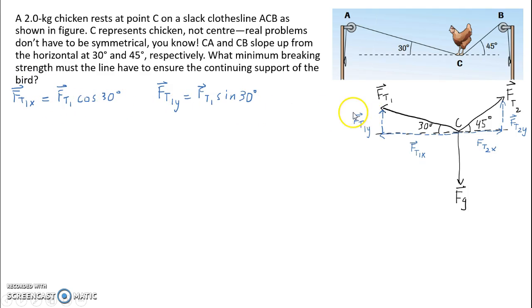Similarly for FT1y, since FT1y is the opposite side, opposite to 30, we're going to have sin 30 equals FT1y, the opposite side, divided by the hypotenuse FT1. When we isolate for FT1y, we get that FT1y is equal to FT1 sin 30.